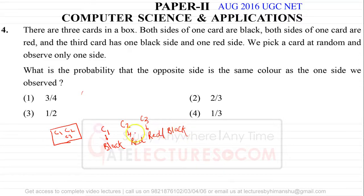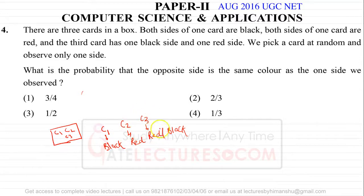The question is: what is the probability that the opposite side is the same color as the one side we observed? You pick any one card from these three — what are the chances that the card has two different colors? One side is red and one side is black. And what is the probability that the card is the same color from both sides?